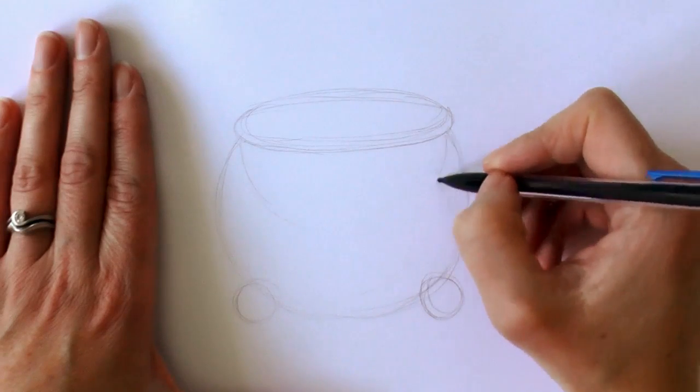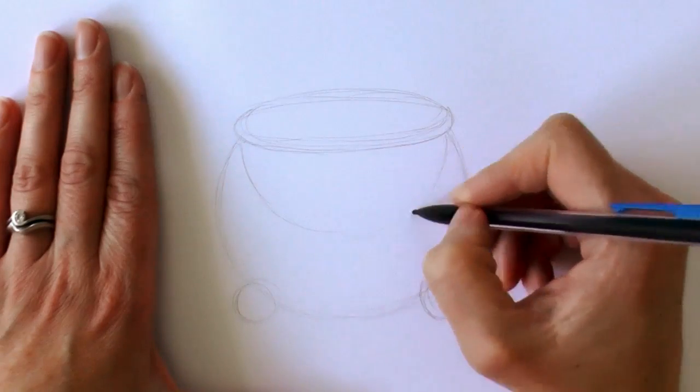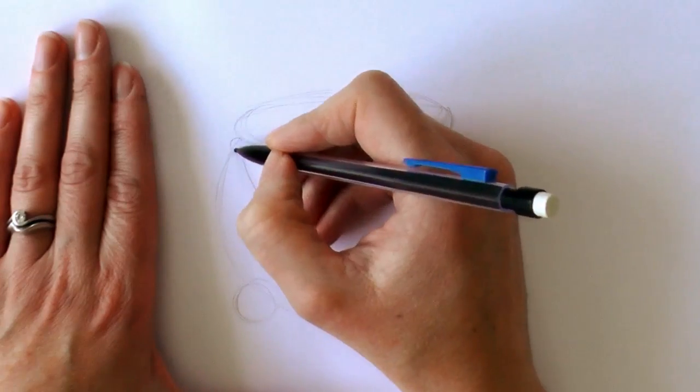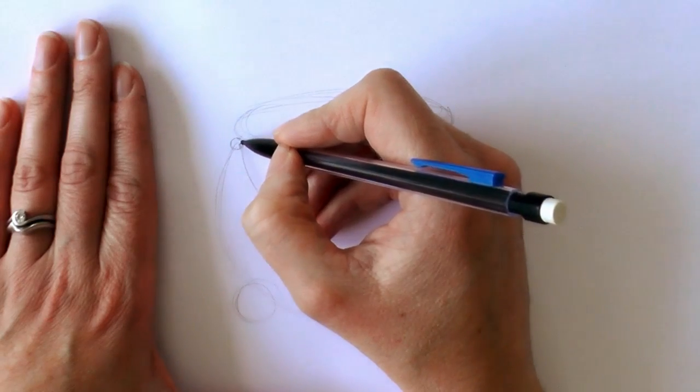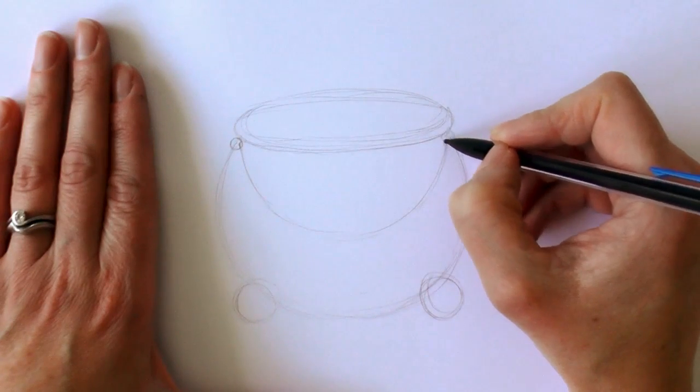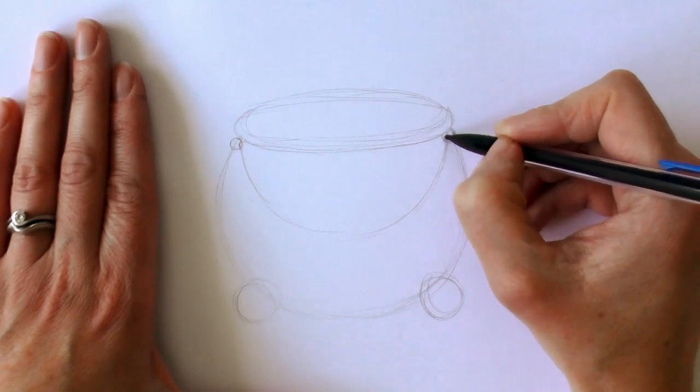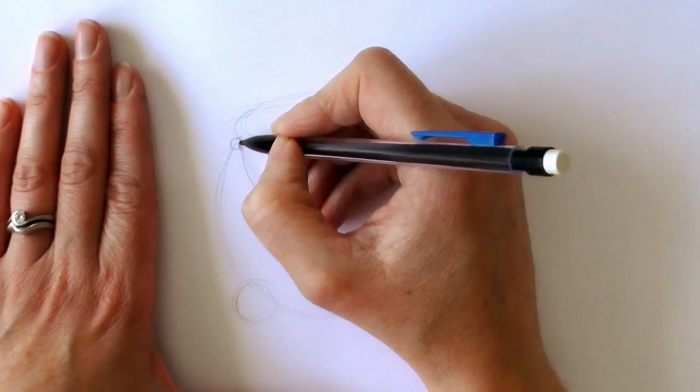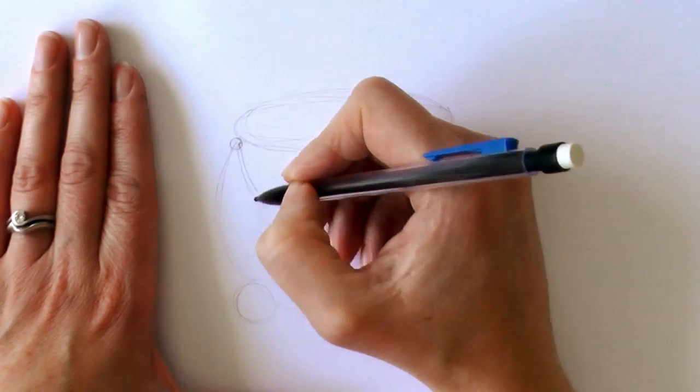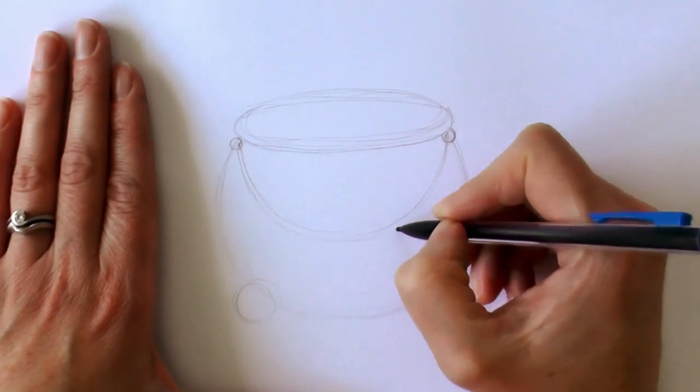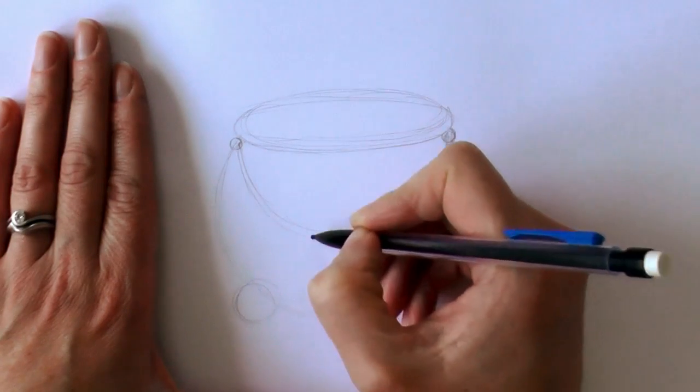Then a half circle for that little handle, then two circles for the little bits that hold the handle to the pot. Then we just double up the line for the handle just to give it a bit of thickness.